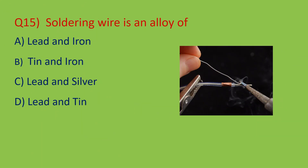Question number fifteen: soldering wire is an alloy of what? An alloy is a homogeneous mixture of metal with metal or metal with non-metal. A soldering wire is an alloy made of two metals — lead and tin. So option D — lead and tin — is the correct answer.